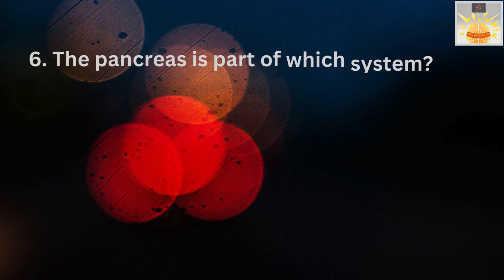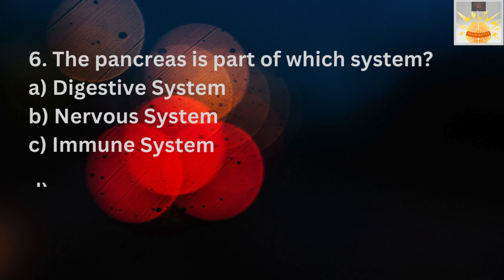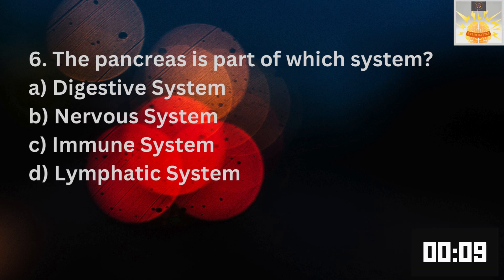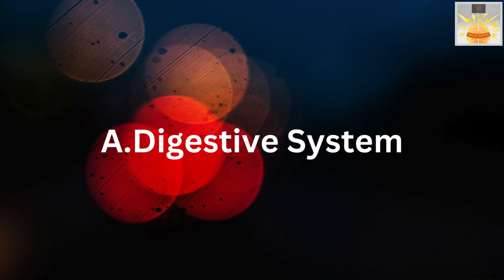The pancreas is part of which system? A. Digestive system. B. Nervous system. C. Immune system. D. Lymphatic system. And the right answer is A. Digestive system. Did you get that right?